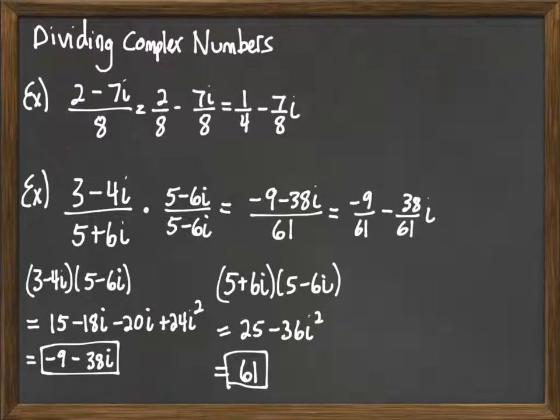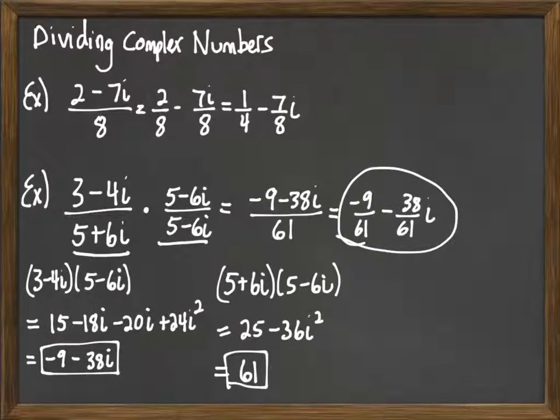So that's our answer. And so that's going to be the process that we're going to use when we divide by a complex number: we're going to want to multiply by the conjugate of that denominator and do that in both top and bottom.